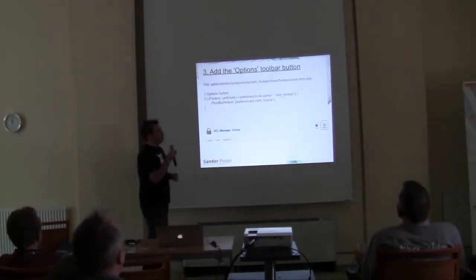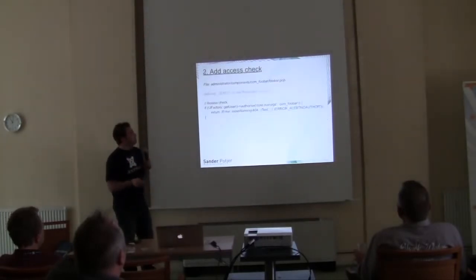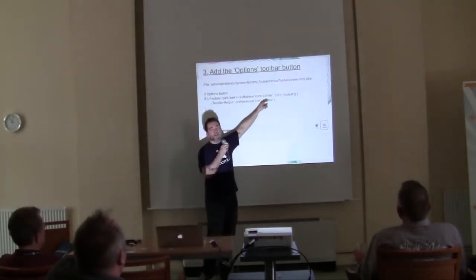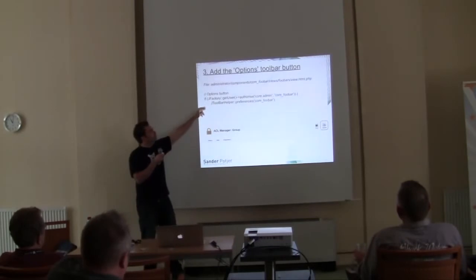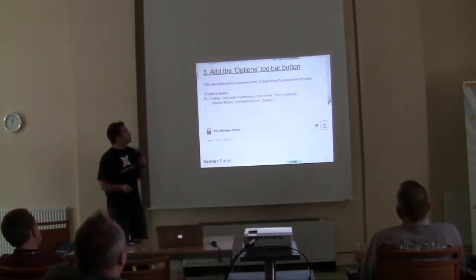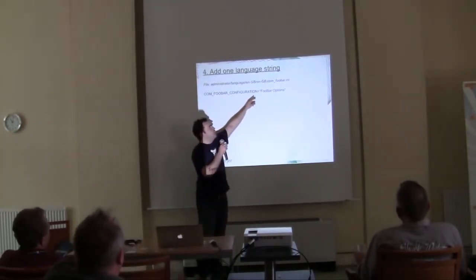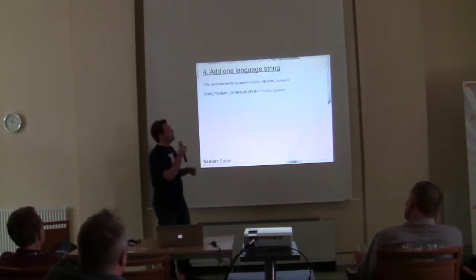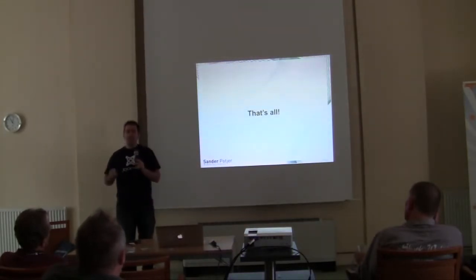The next thing is to be able to set those permissions via an option button in the toolbar. We check if the user is able to configure the component — that's core.admin, again for your extension name. It returns a value, and if you are allowed the toolbar will render the option button. Just three other lines. Then the last step is to make sure your option title is added to your language file — just one additional line in your language file is needed, so you get your toolbar options once you click on it.